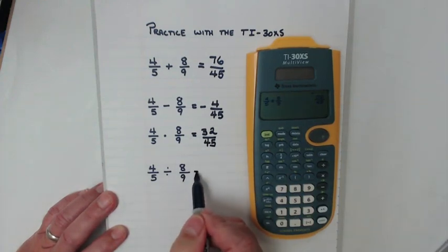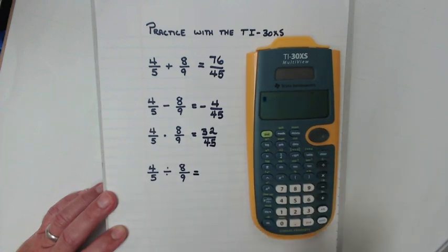And now dividing. Clear out my calculator. Fraction button. Four, move it down. Fifth, move it over for the operation.